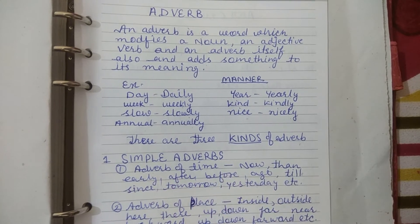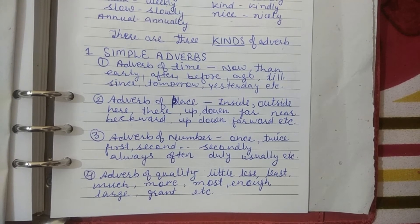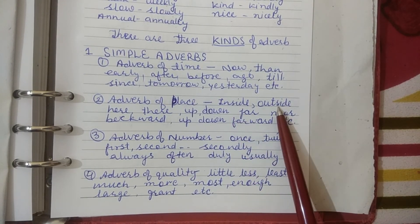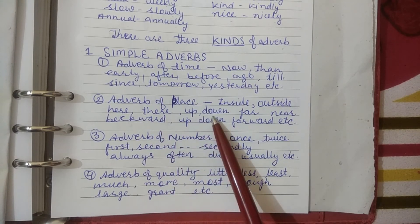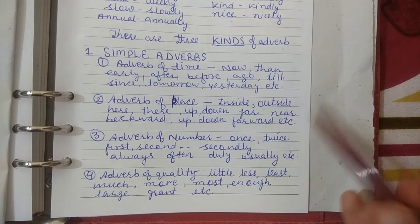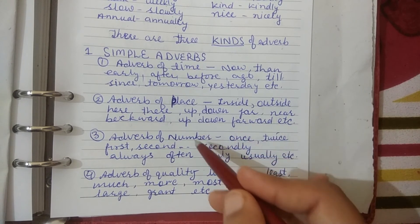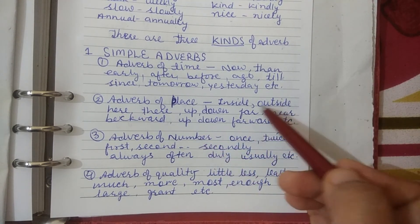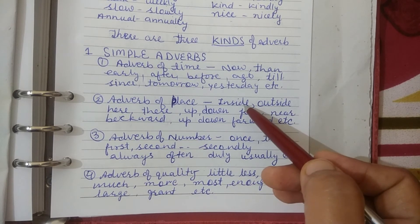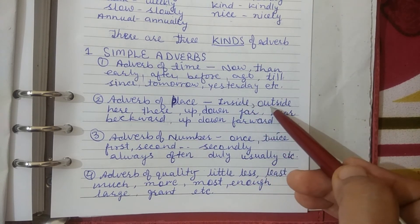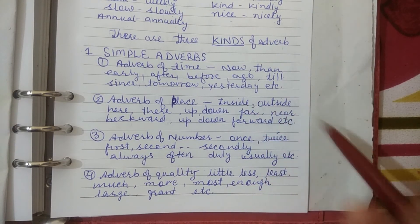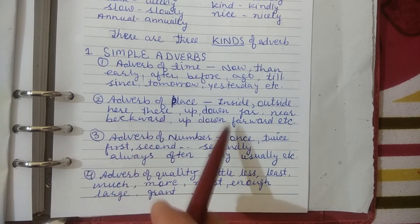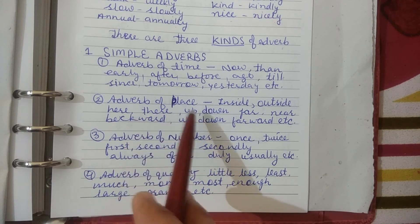Next is our adverb of place. Examples: inside, outside, here, there, up, down, far, near, backward, forward, and so on. For example: My son is sitting inside the room. Daughter is playing outside the room. I am waiting for you here. They are going there. These all are examples of adverb of place.